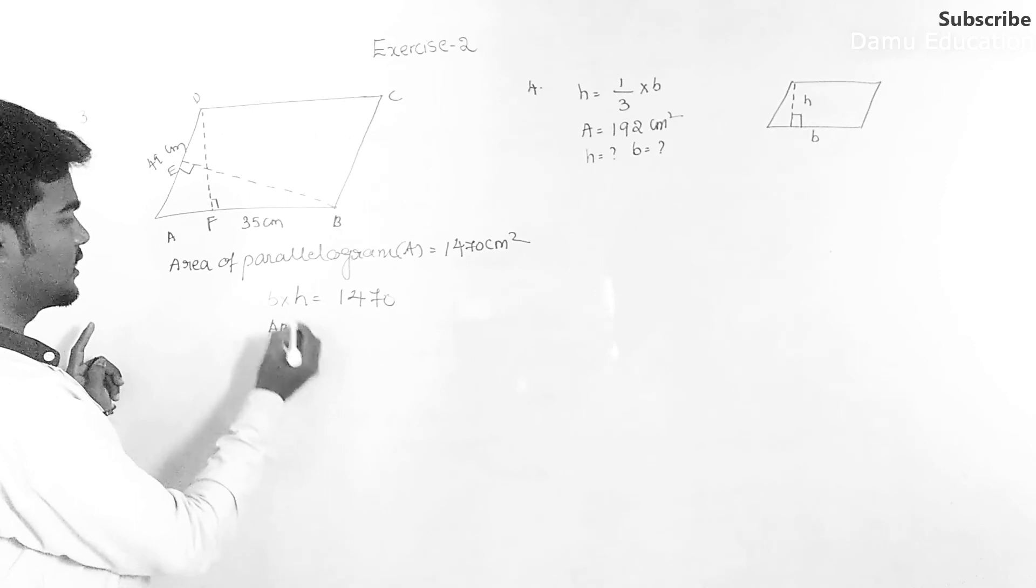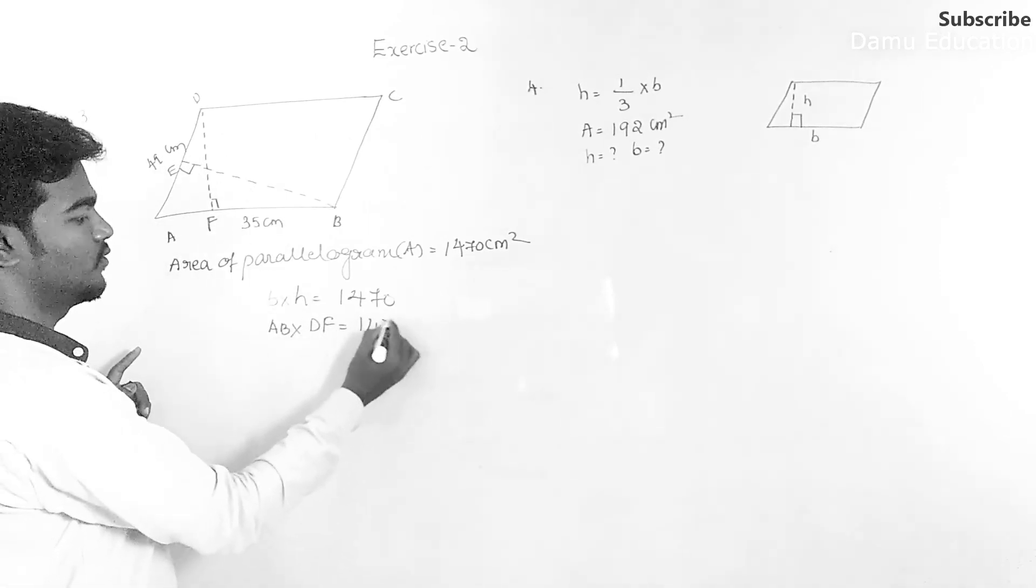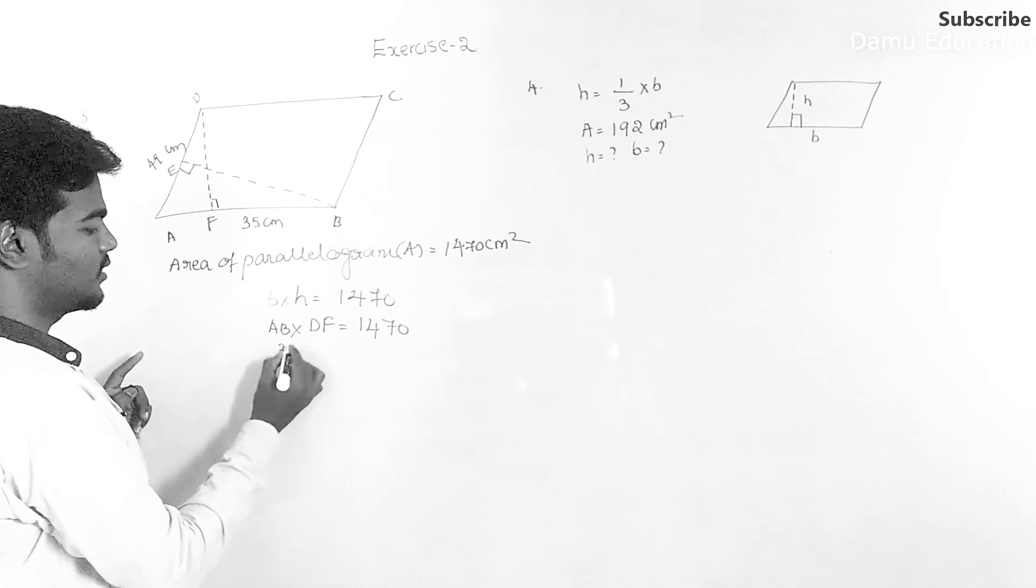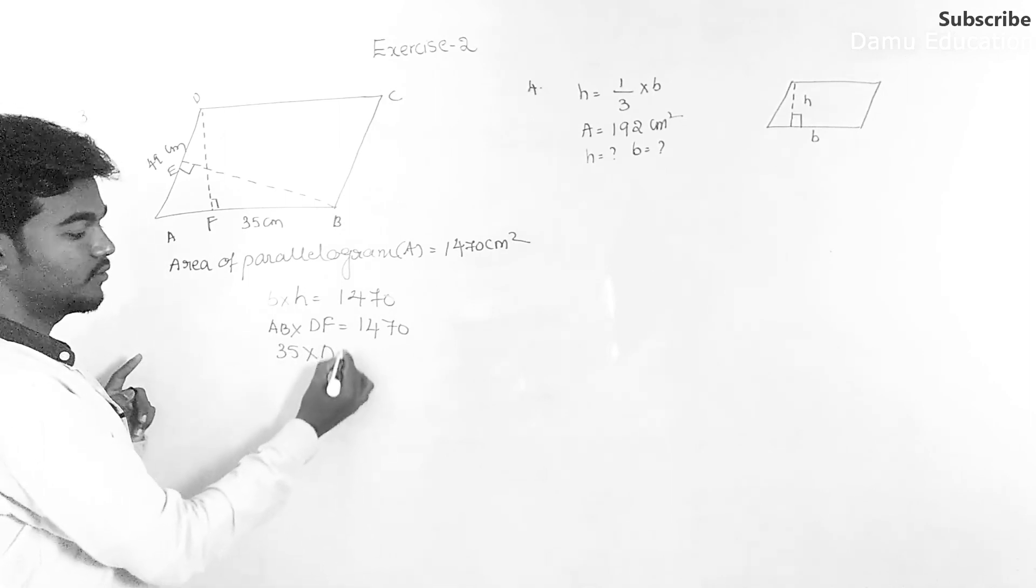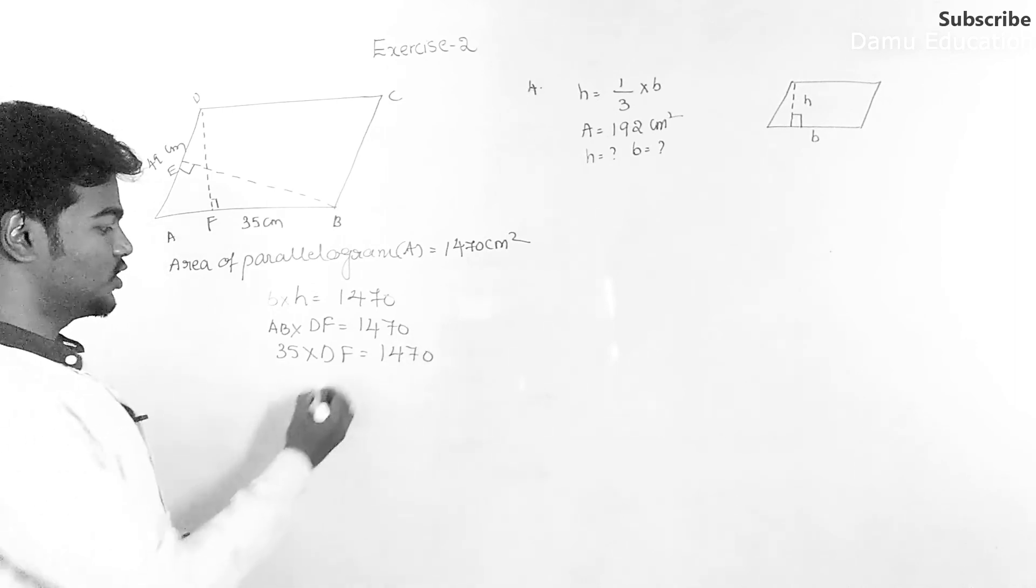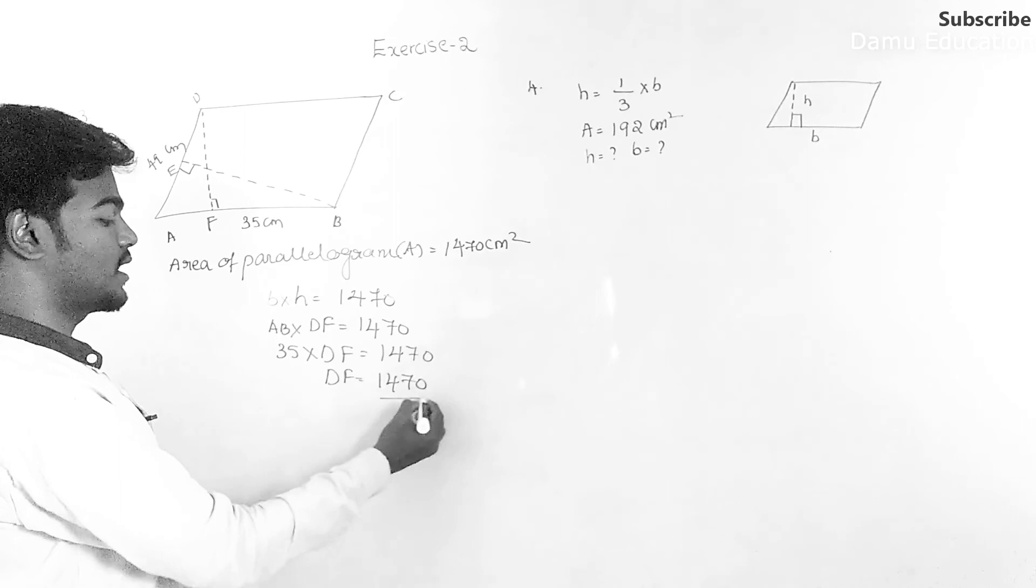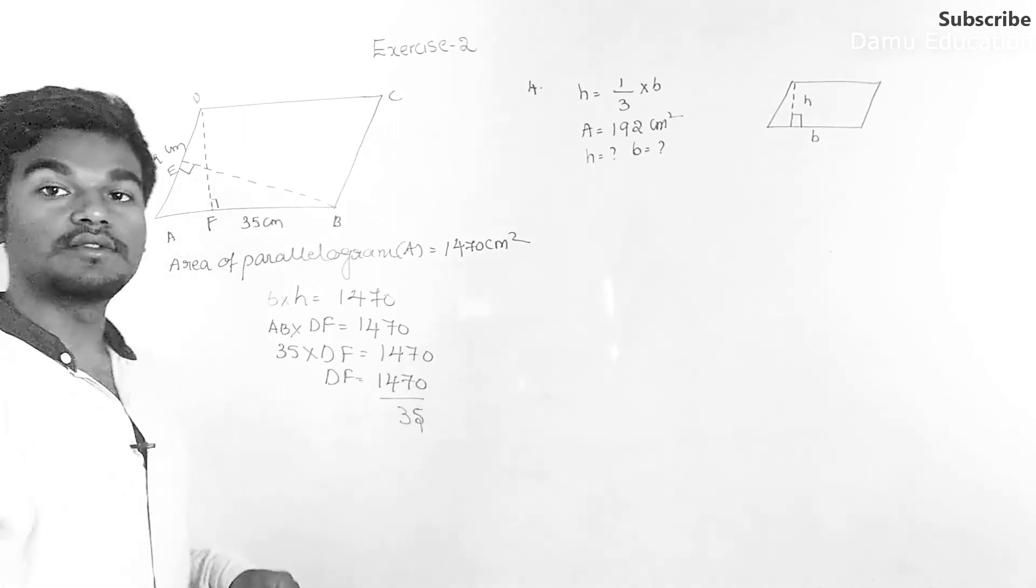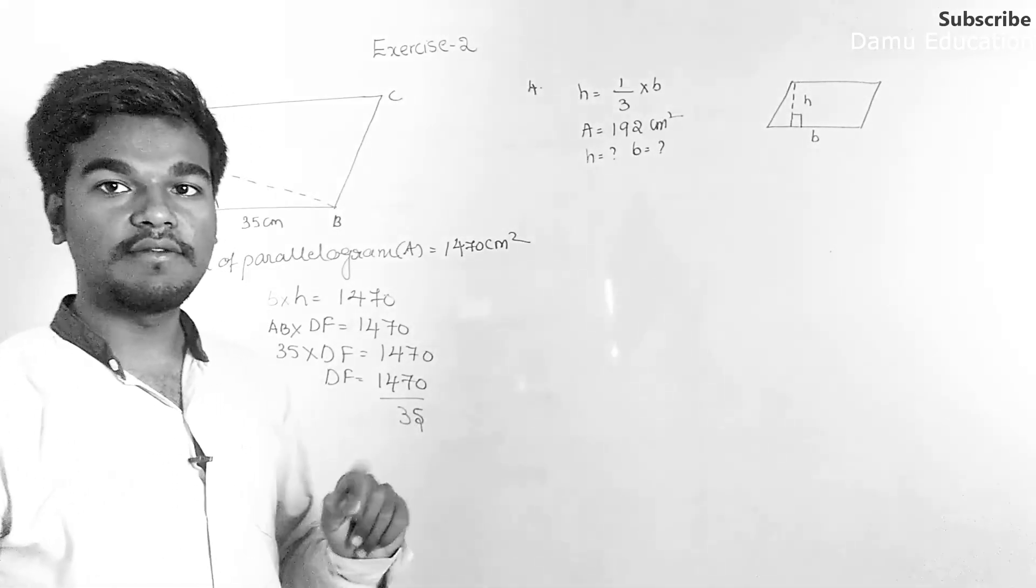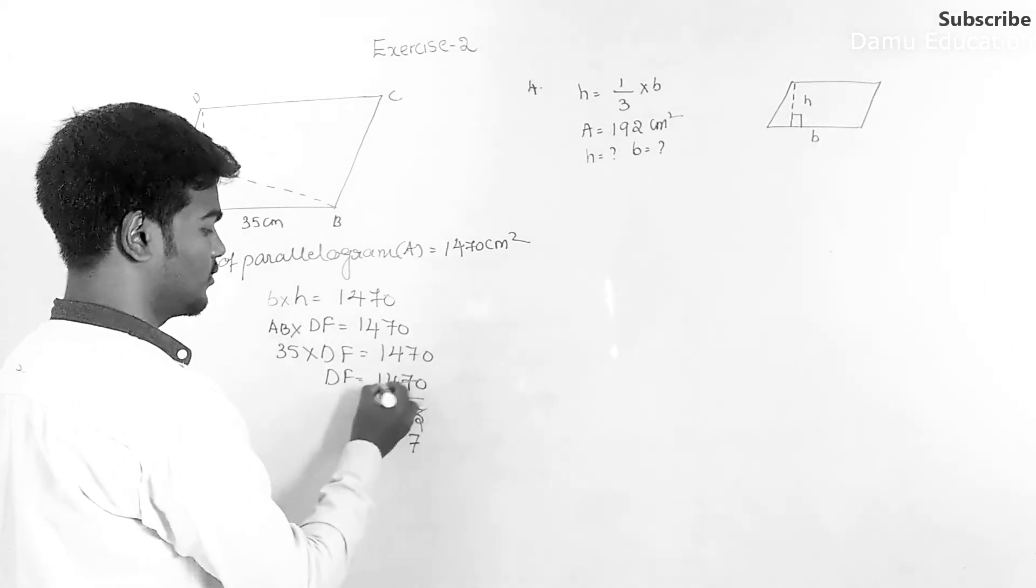1470, so AB is 35 into DF equals 1470. Then DF will be equal to 1470 by 35. So we can easily divide with 5: 5 into 7 is 35, 5 into 2.